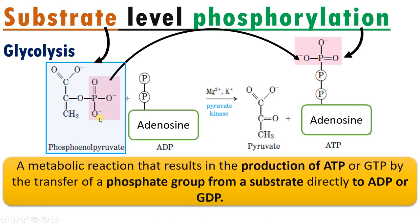We can define substrate level phosphorylation as a metabolic reaction that results in the production of ATP or GTP by the transfer of a phosphate from the substrate directly to ADP, finally forming ATP. Hope you understand substrate level phosphorylation.